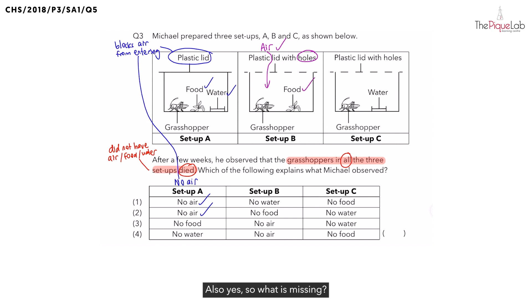So, what is missing? In setup B, there was no water. So, I'm going to write this out. For setup B, there is no water. Which means, which options are possible? We can take option 1.